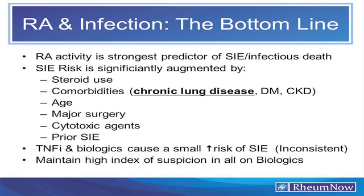When it comes to infectious risk, we need to keep remembering that when our patients die of infection, we always blame the drug. But RA activity, inflammatory load, and debility are the single biggest predictors of infectious risk. That risk is augmented by steroid use — uniformly, almost every study, almost every disease, at almost any dose.